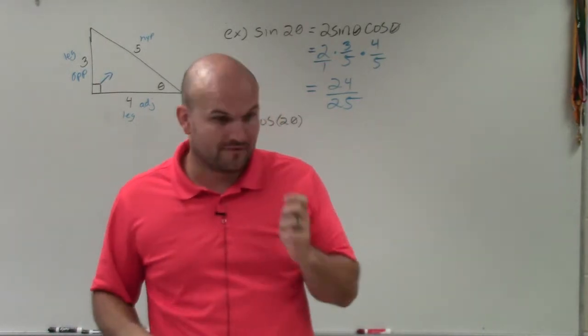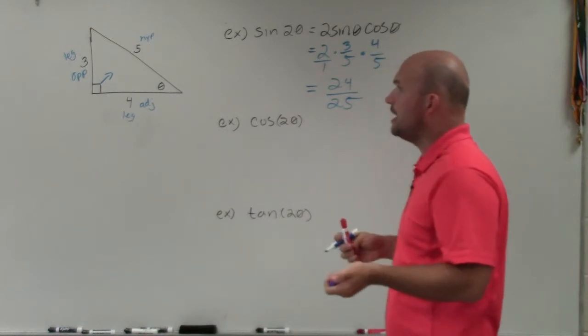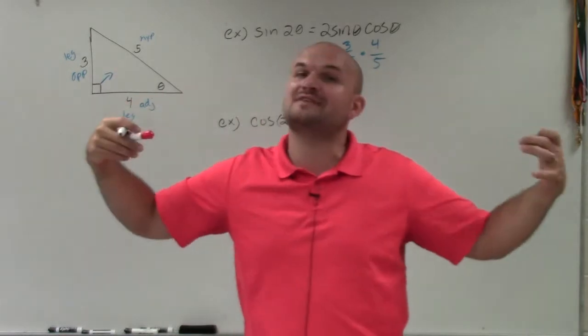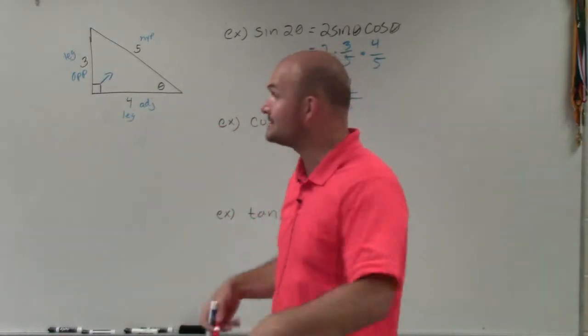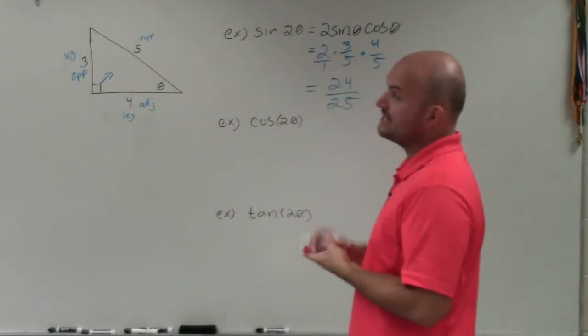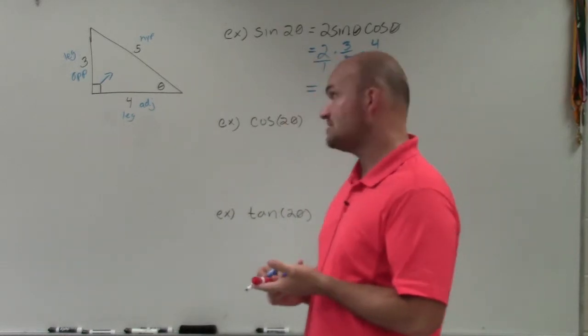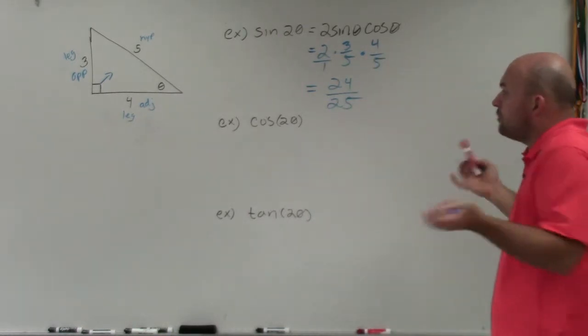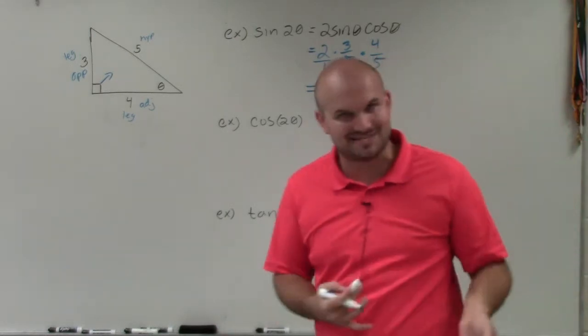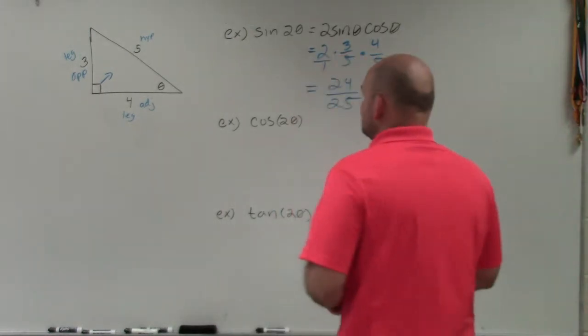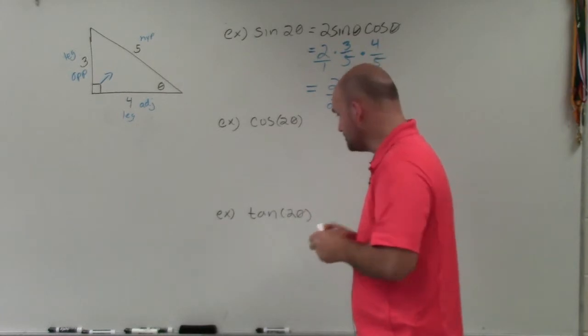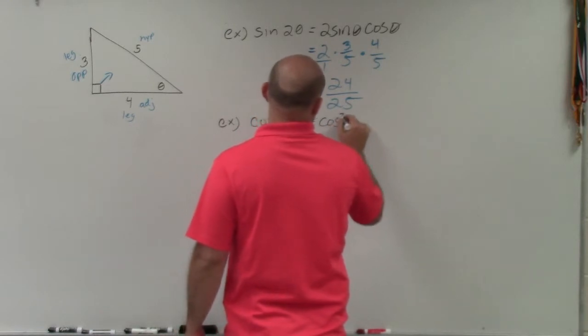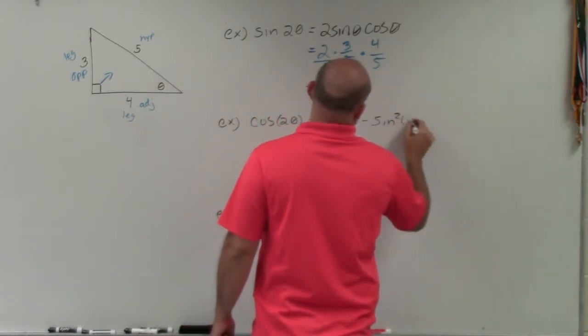Now for cosine, we have multiple different formulas that we could use. I wrote them down because I'm teaching during the summer and I don't remember off the top of my head unless I start teaching it actually in a class. So cosine of 2 theta, we have cosine squared theta minus sine squared theta. We have 2 cosine squared minus 1 or 1 minus 2 sine squared theta. So we could use all of those or we can use those interchangeably. But in this example, I'm going to use cosine squared minus sine squared. So I'll do cosine squared of theta minus sine squared of theta.